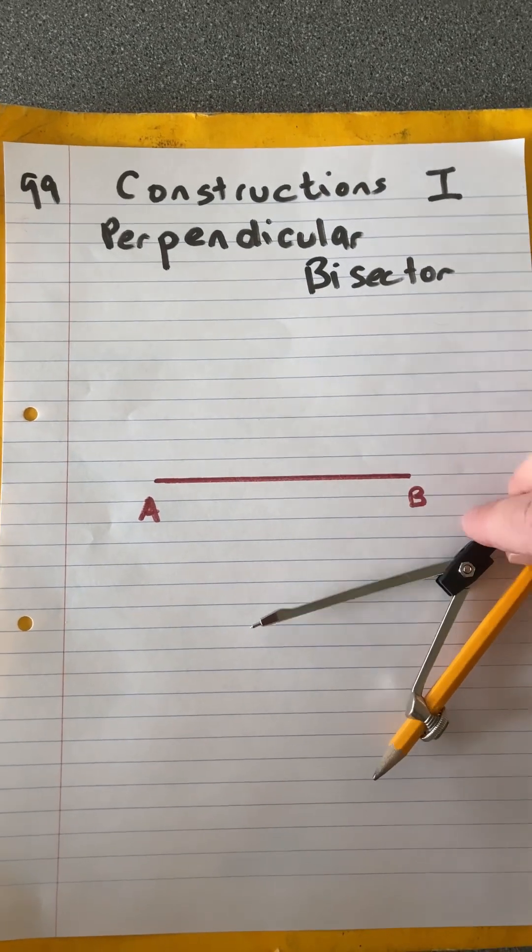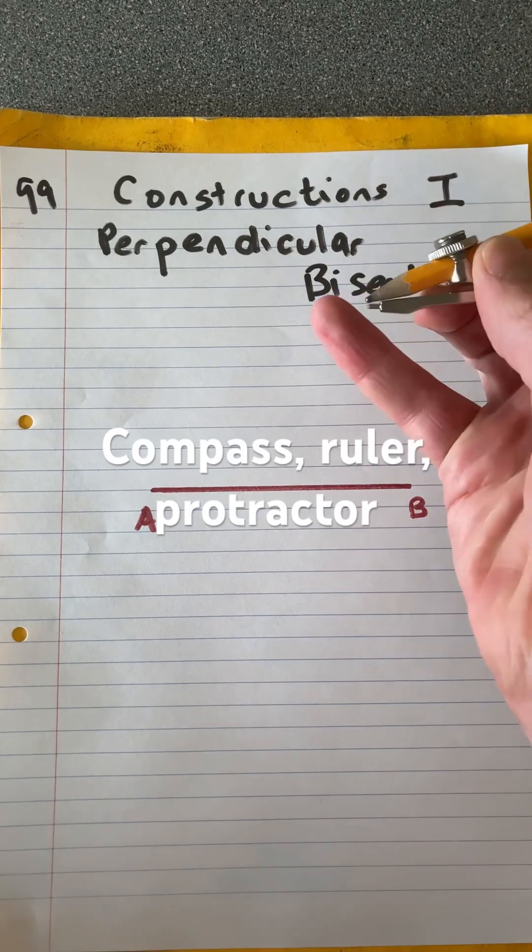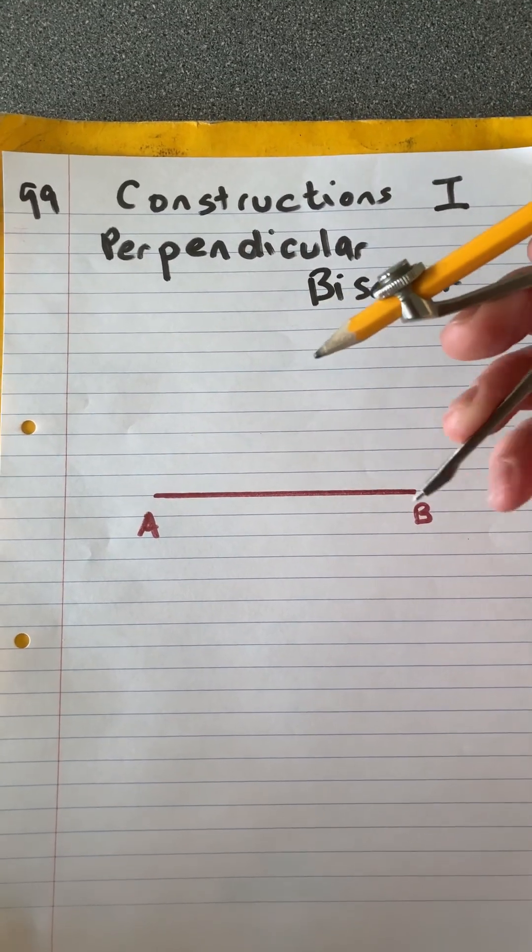What we need is a pair of compasses, a set of compasses, and make sure that the pencil and the point are meeting at the same place.